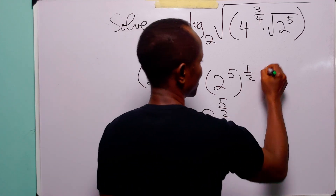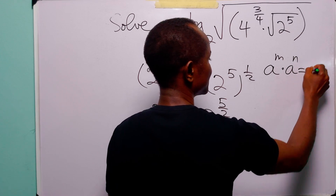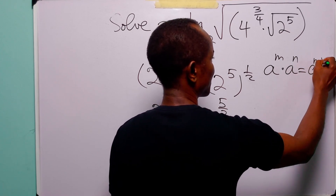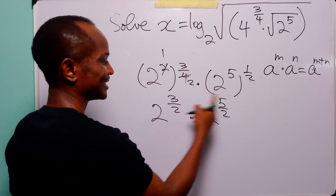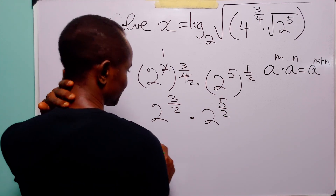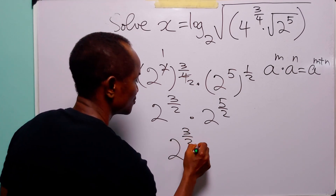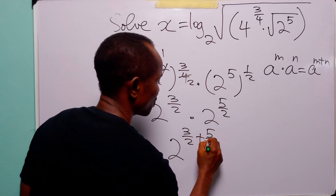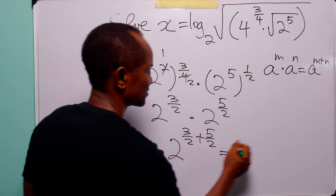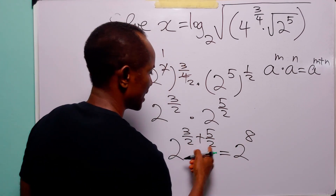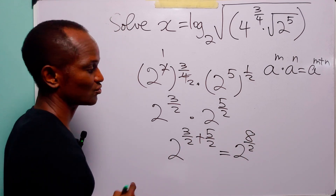And here we have 5 times half, which is 5 over 2. Now remember that when we have a to the power m multiplied by a to the power n, this is equal to a to the power m plus n. So to combine these two, we simply add the exponents. We have 2 to the power 3 over 2 plus 5 over 2, and of course this is equal to 2 to the power — 3 plus 5 is 8 — over 2.